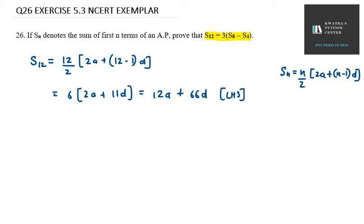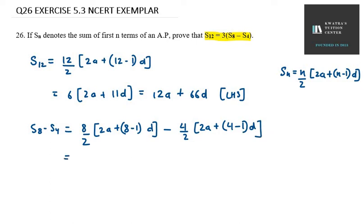We need to find the right-hand side. We have S8 minus S4. First S8, then S4. It will be 8 over 2 in bracket 2a plus 8 minus 1d. We get 4 in bracket 2a plus 7d minus 2 in bracket 2a plus 3d.